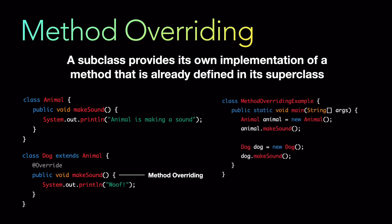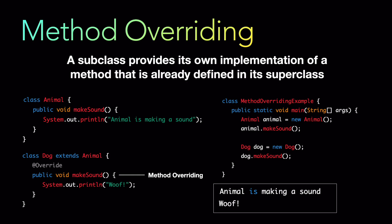In a sample class with the main function, we create an animal object and call animal.makeSound, then create a dog object and call dog.makeSound. The animal.makeSound prints 'animal is making a sound,' and dog.makeSound prints 'woof,' because the dog.makeSound now uses the overridden implementation inside the dog class, not the implementation of the animal class. That is method overriding.